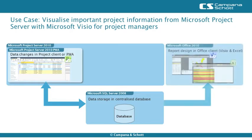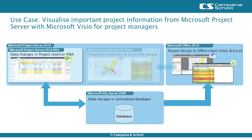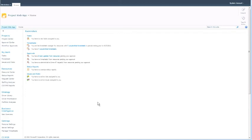Project status information from this database is connected to a map created with Microsoft Visio and a table in Microsoft Excel. By publishing both files to Microsoft SharePoint, a dashboard for Project Portfolio Managers is created and project status information can be tracked easily. The information is automatically updated based on current project data.